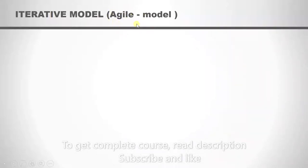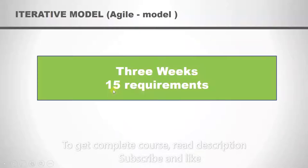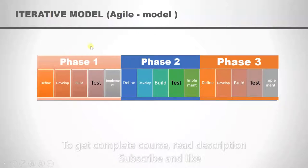Now suppose you have a software that you need to implement in three weeks and it has 15 requirements. If you use the agile model, then this is how it will work. The agile model will have three different phases, each phase will be for one week. Phase one is for the first week, phase two is for the second week, and phase three is for the third week.